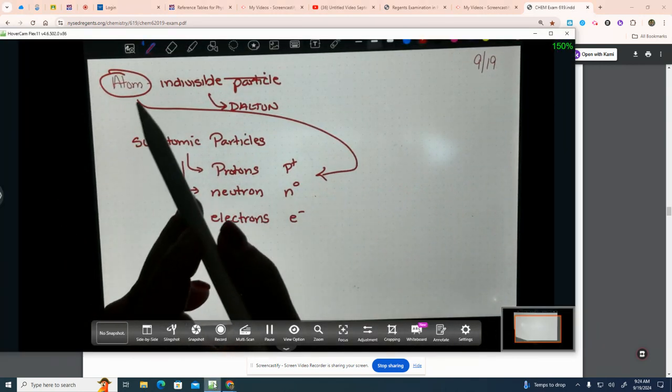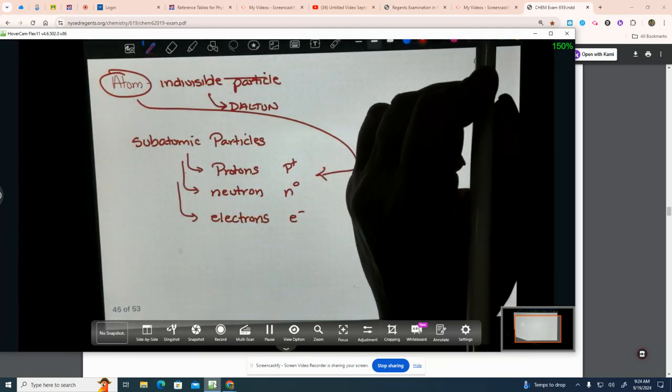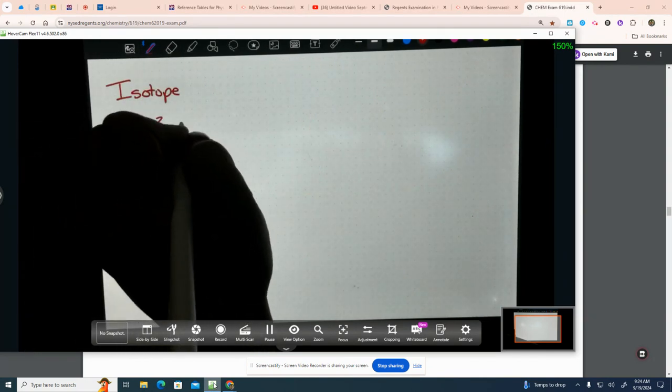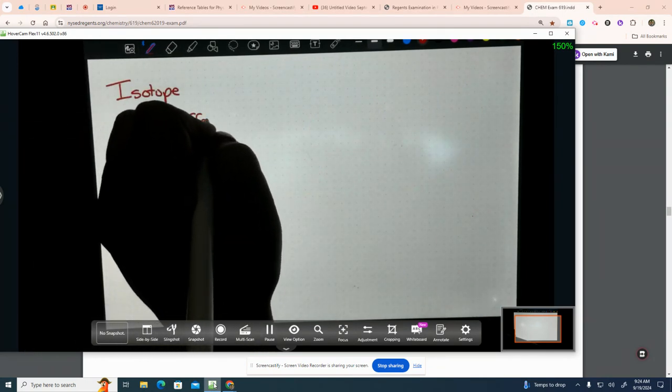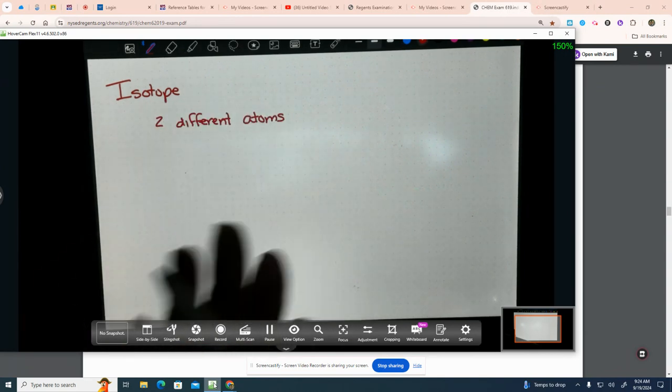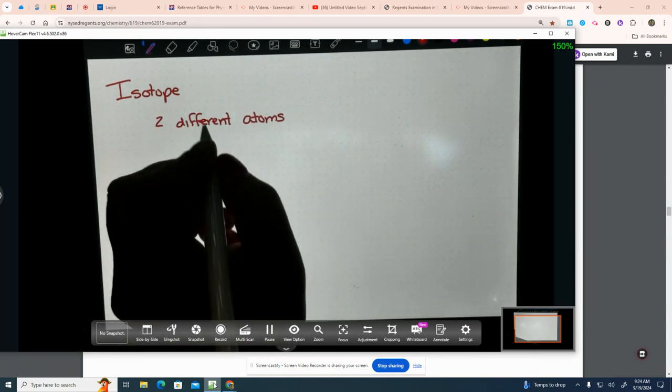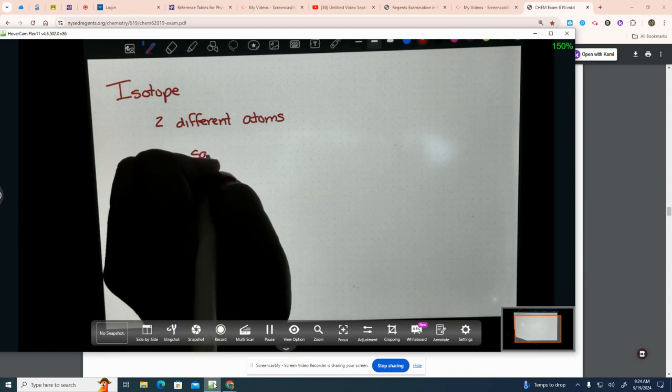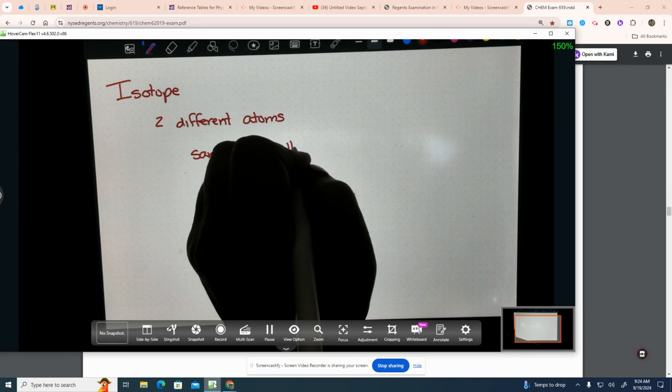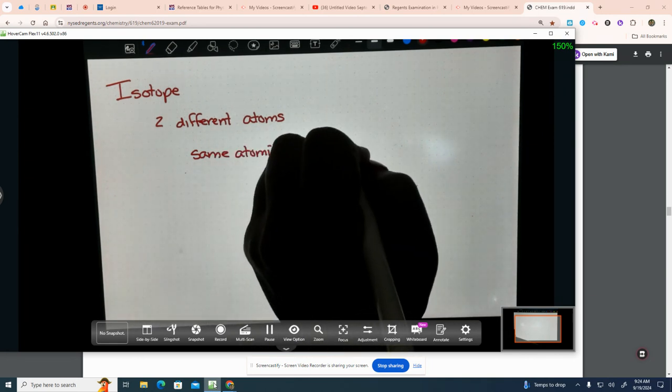So we know what an atom is. Now let's define isotope because I think some people are forgetting what an isotope is. An isotope are two different atoms. They're different from each other in the sense that they are going to have the same atomic number but different mass numbers.